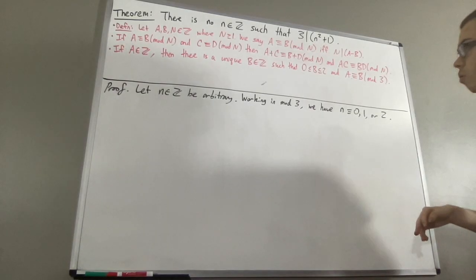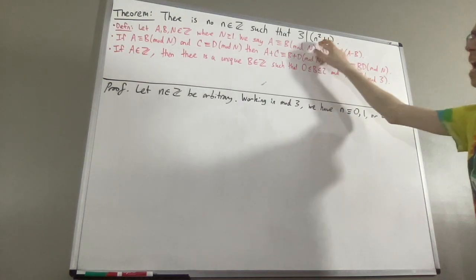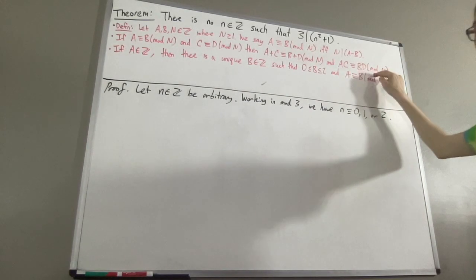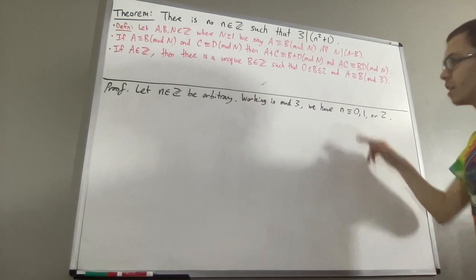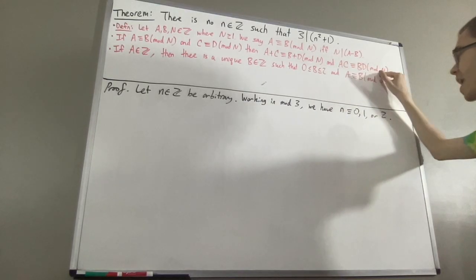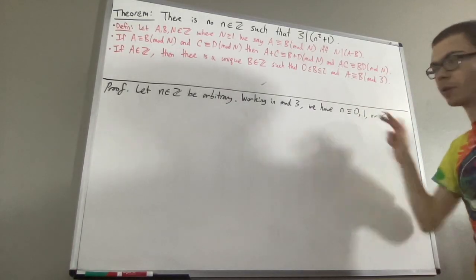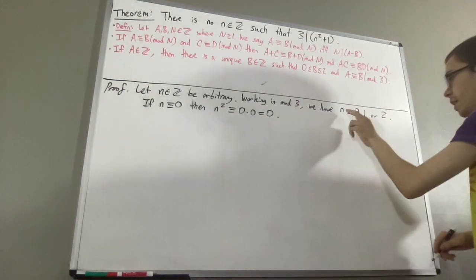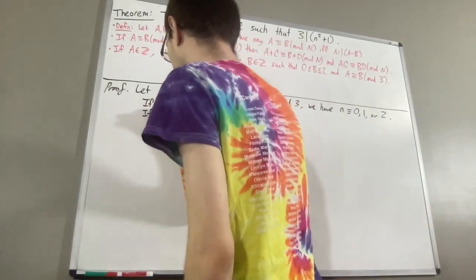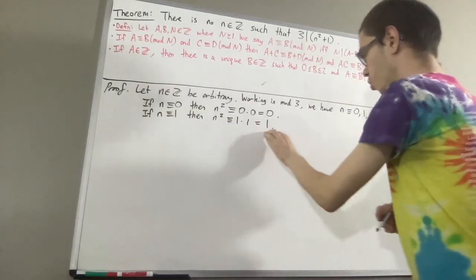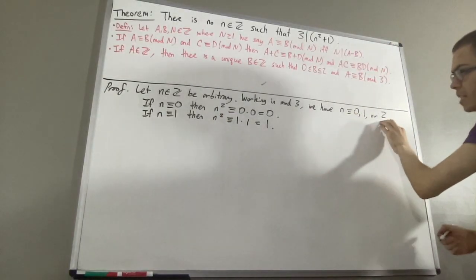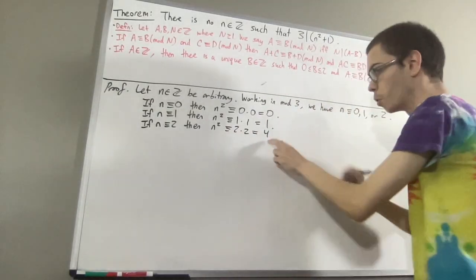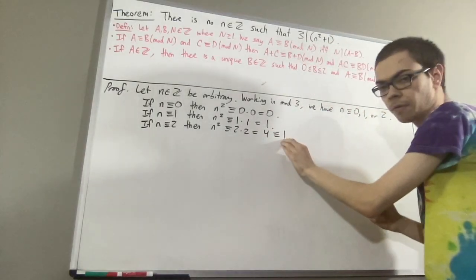Given n is congruent to 0, 1, or 2, what is n squared congruent to? We're going to use compatibility of multiplication to figure that out. If n is congruent to 0, then by compatibility with multiplication, n squared is congruent to 0 times 0, which is 0. In the case where n is congruent to 1, then n squared is congruent to 1 times 1, which is 1. Now let's consider the case n is congruent to 2. In that case, n squared is congruent to 2 times 2, which is 4. But in mod 3, 4 is congruent to 1, because 4 and 1 differ by a multiple of 3.